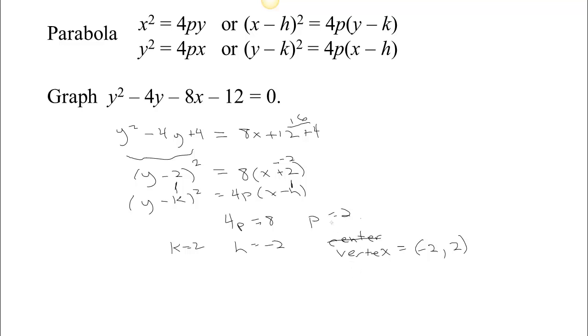And the focus is 2 units. Let's see, in this case this is a parabola that opens to the right, so the focus is 2 units to the right. You could get this graph just by choosing values of y and finding values of x that match those. And since this has the form x equals y squared, it's on its side. It's different than what you're used to, y equals x squared, which opens up or down.